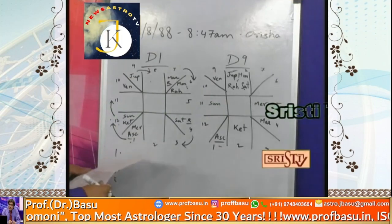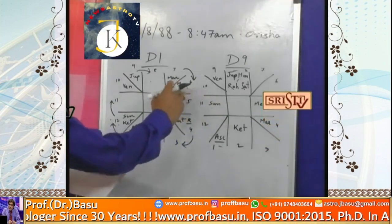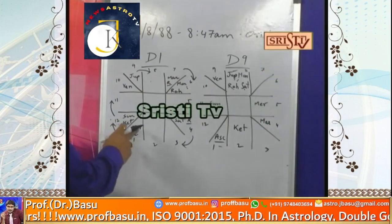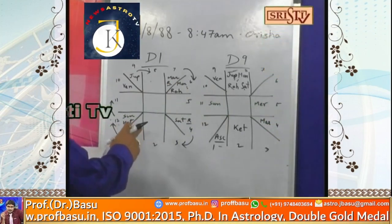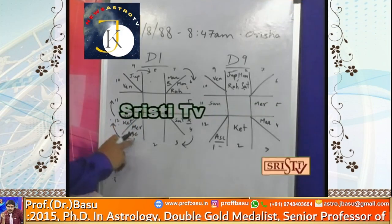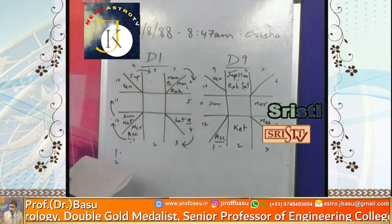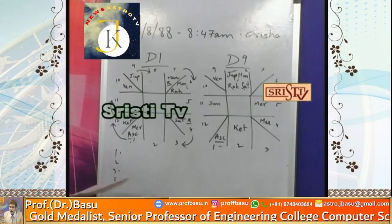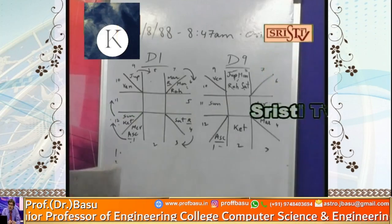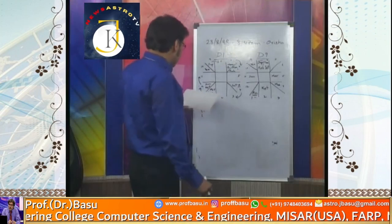Point six — the Moon. Moon and Rahu are placed in the same sign in D1. Mercury is getting the effect of the 12th Bhav in the Bhav chart. This signifies that the native will have problems making decisions — if the native makes a sudden decision, it is likely to be wrong.